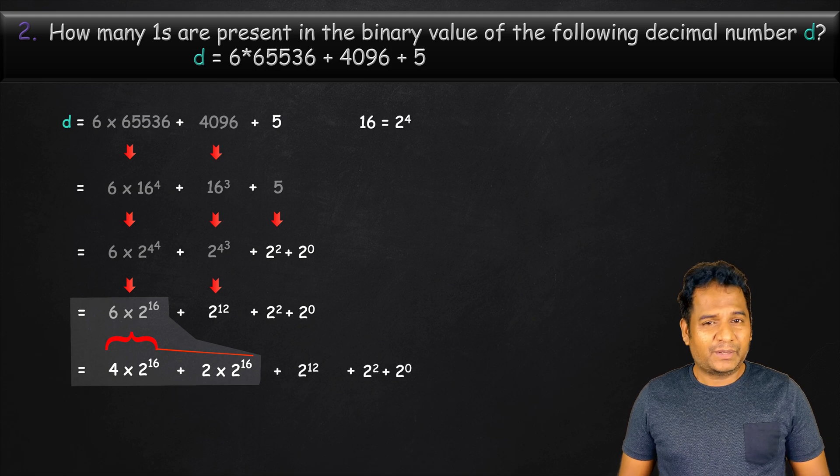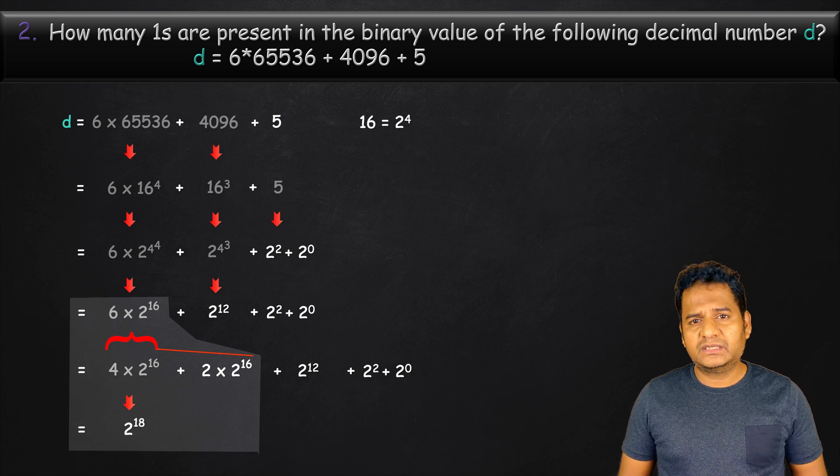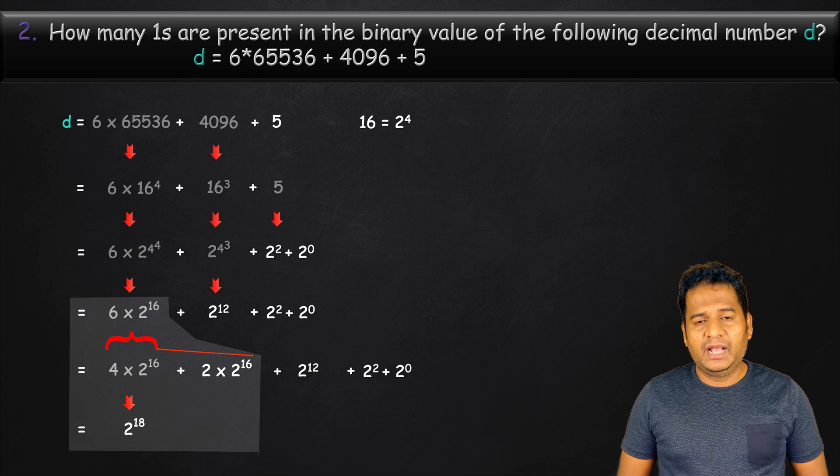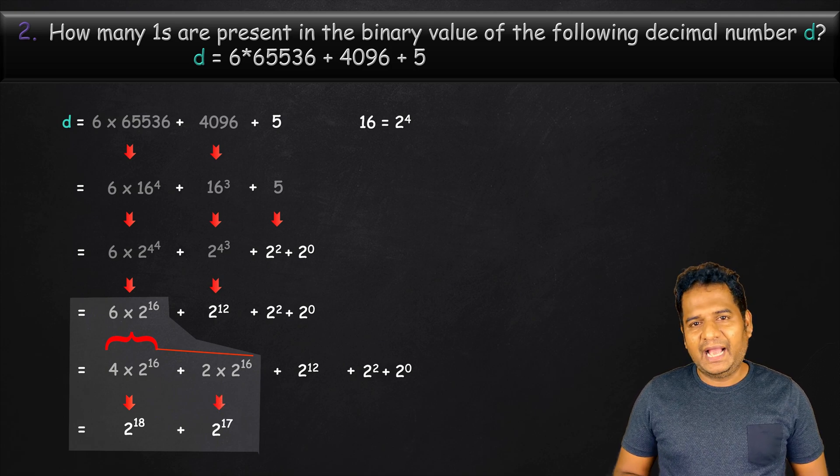Then the 4 times 2 power 16 can be represented as 2 power 18, because 4 is nothing but 2 power 2. And similarly, the 2 times 2 power 16 can be represented as 2 power 17.